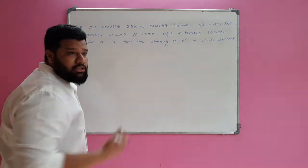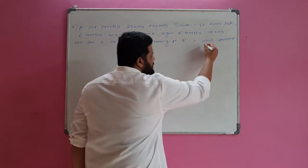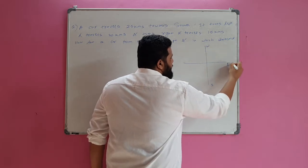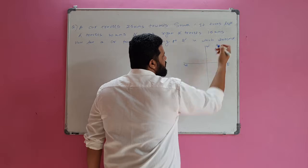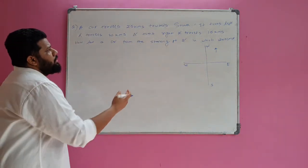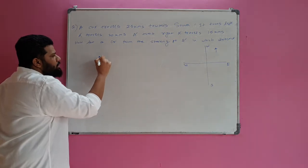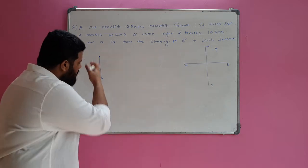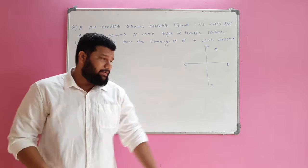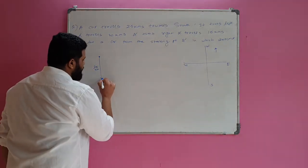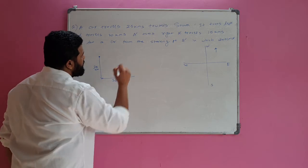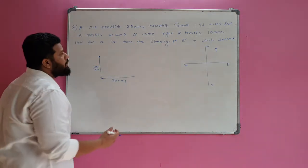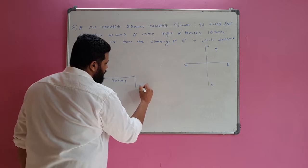A car travels 25 kilometers towards south. We set up our direction diagram: south, north, east, and west. Starting from the initial point, we go 25 km south. Then the car turns left — facing south, left is east — and travels 30 km. Then it turns right — now facing south again — and travels 15 km. The car is now at point B, starting point is A.